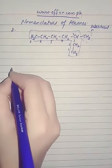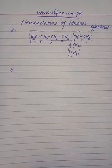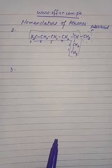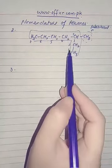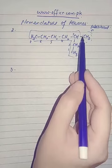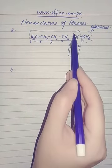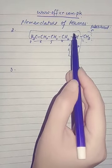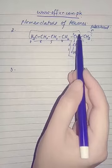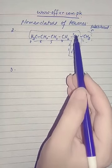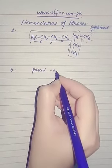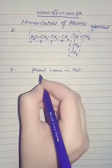Rule number 3 says to use the numbers obtained by applying rule number 2 to designate the location of the substituent group. It means that here you will locate where the substituent is present. For example, we have a methyl group attached to carbon number 3, so it is obvious that the substituent is present at carbon number 3.